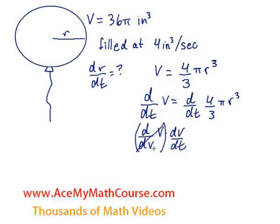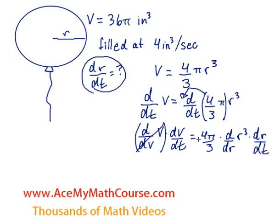Over on the other side, we can actually take the 4/3 π and place it in front of the derivative because it's just a constant. The derivative of r³, d/dt of r³, is d/dr of r³, or the derivative of r³ with respect to r, times dr/dt, which is ultimately what we're looking for.